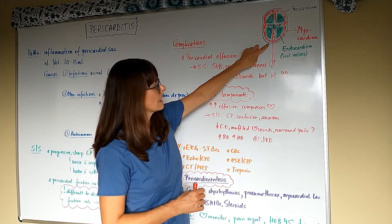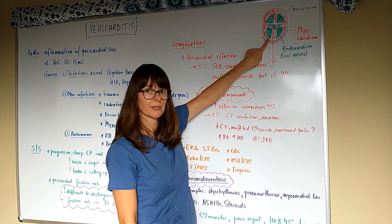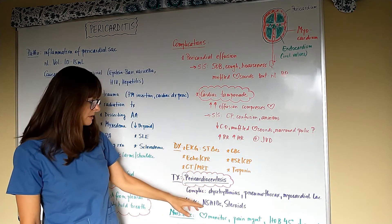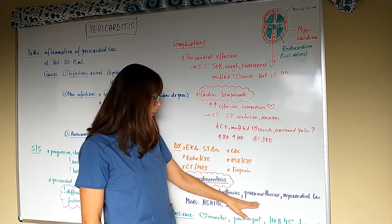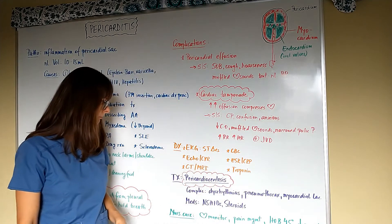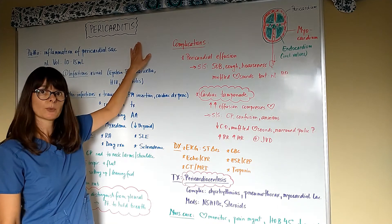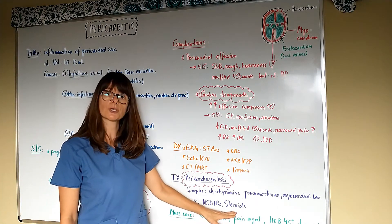Because if that needle gets past the pericardial space, it can puncture the myocardium, it could irritate it so that it will cause dysrhythmias, you could basically cause a pneumothorax, puncture along with that needle, or even lacerate the myocardium. In terms of medication treatments, because we are dealing with inflammation of the heart muscle, NSAIDs and steroids are usually indicated.